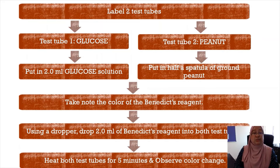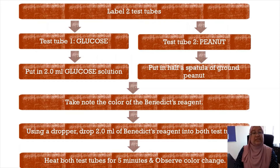This procedure is performed to determine the presence of reducing sugar. Label two test tubes: test tube one for glucose, test tube two for peanut. In test tube one, put in 2 ml of glucose solution. In test tube two, put in half a spatula of ground peanut. Take note of the color of the Benedict's reagent.